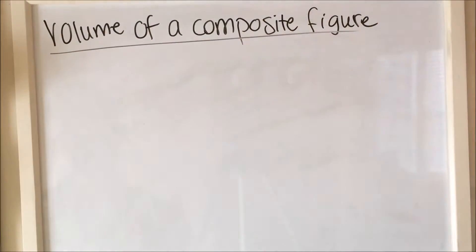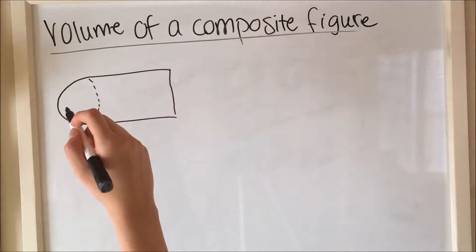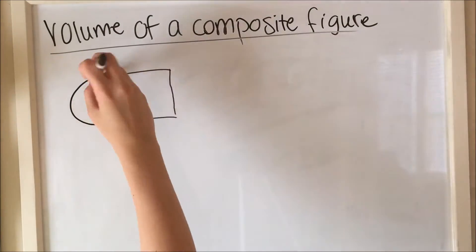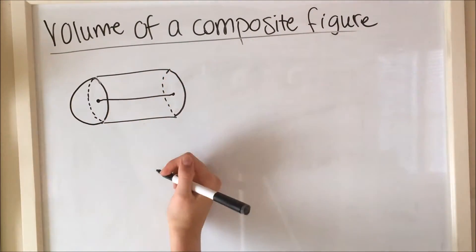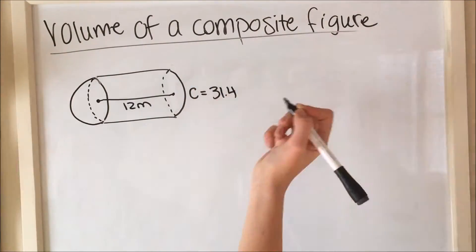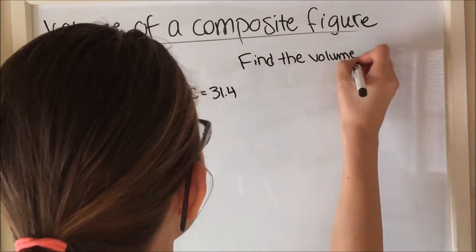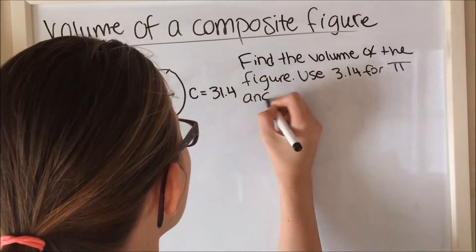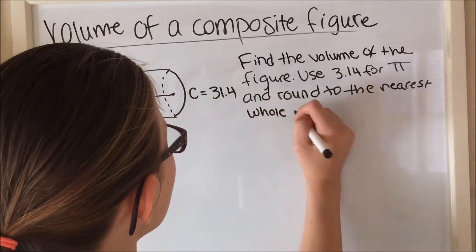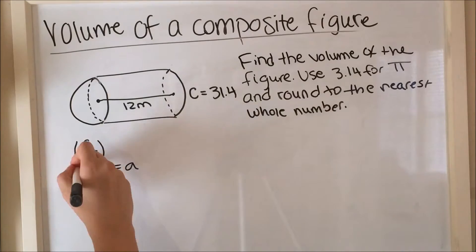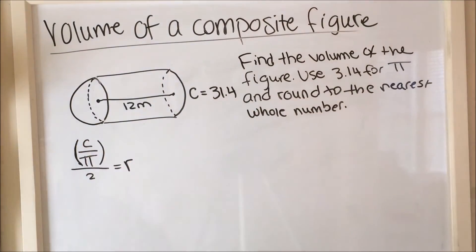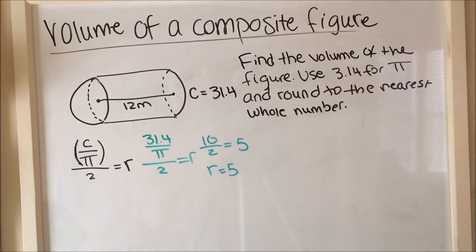Now I'm going to show you the volume of a composite figure — this is more complicated. This figure has half of a sphere and a cylinder. The height is 12 meters and the circumference is 31.4. Use 3.14 for π and round to the nearest whole number. To find the radius, divide the circumference by π to get the diameter, then divide the diameter by 2. The radius is 5.